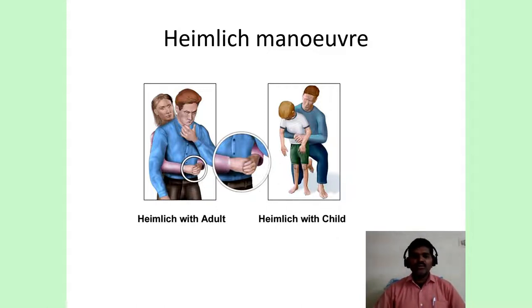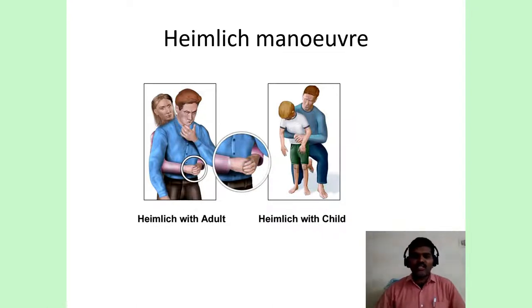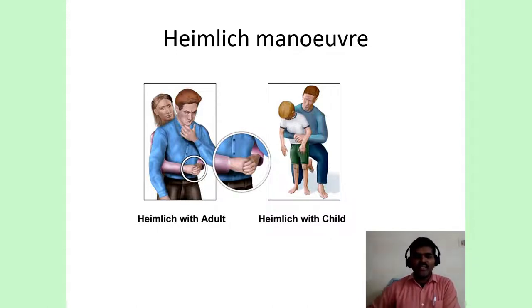If the patient becomes unconscious, make him flat and start CPR as per BLS protocol. For a child where your fist is too large, kneel behind the patient, make them bend forward slightly, and use your forearm just below the rib cage. Encircle with the other hand holding your wrist, and deliver a similar upward and backward thrust.